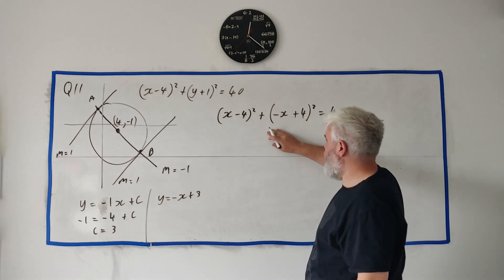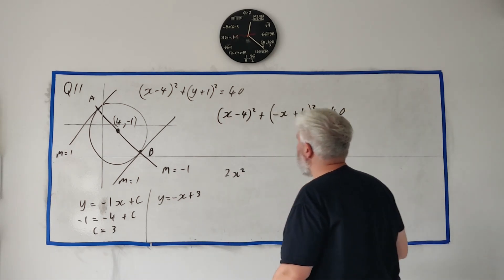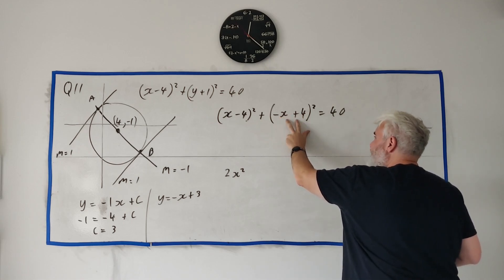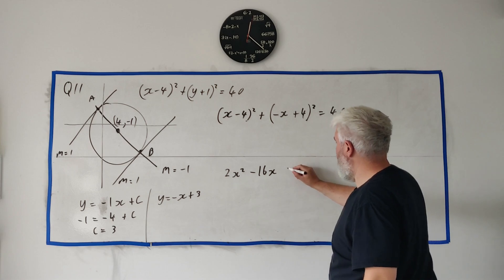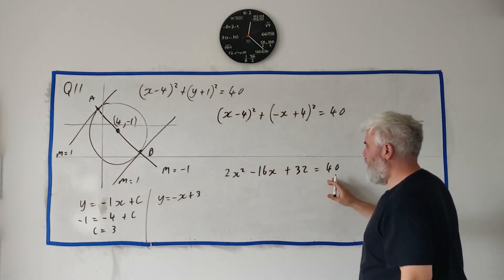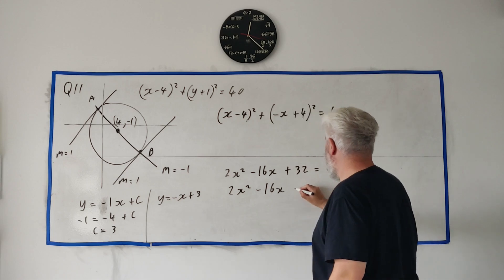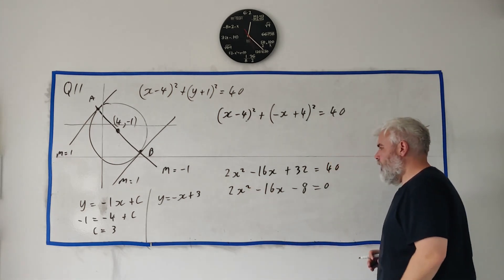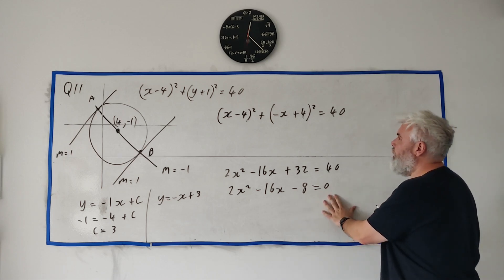Expanding both brackets gives x² and another x² — so 2x² — plus -8x and -8x giving -16x, plus 16 and 16 giving 32, all equal to 40. Cleaning up: 2x² - 16x - 8 = 0. This is a quadratic; you could use the quadratic formula. However, there's a neater approach.